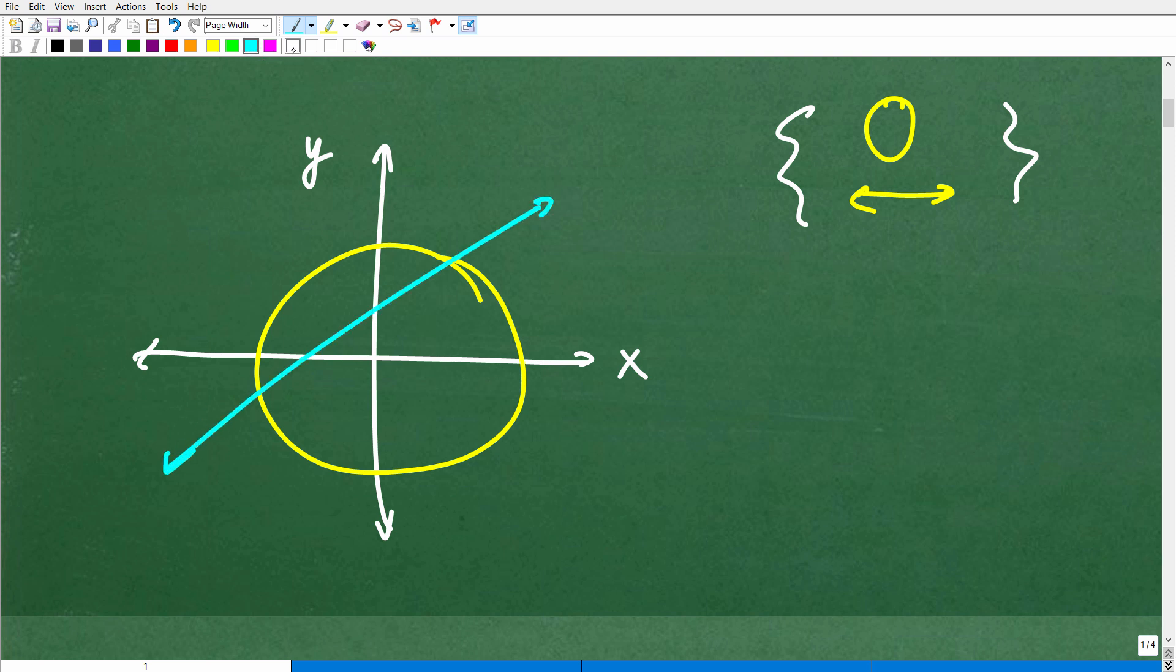Okay, so again, the points of intersection, if these two objects do in fact intersect, because here's the thing, I could have a circle like this and I can have my line over here where I have no points of intersection. So they may not be a solution to this system.